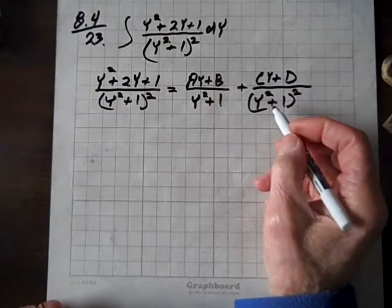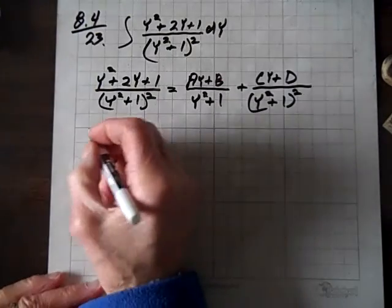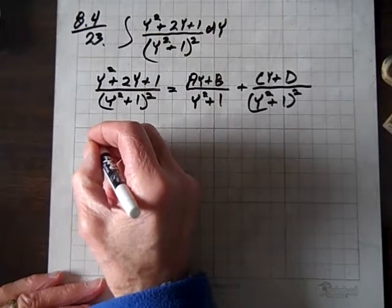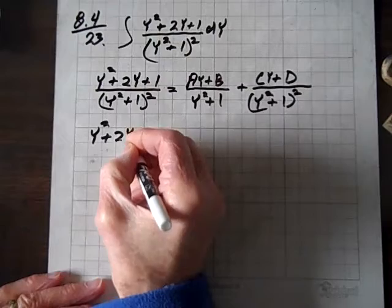And now we'll multiply through by the common denominator, which is what we have right here. And when we do that, on the left, the denominators divide out, and we get y squared plus 2y plus 1.